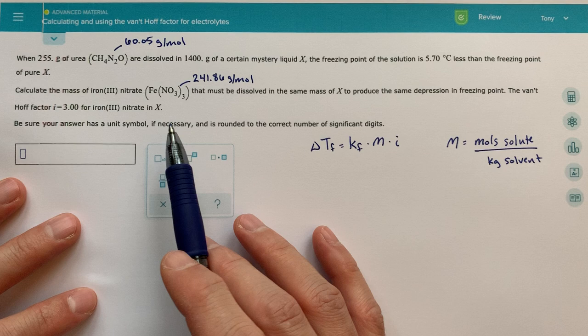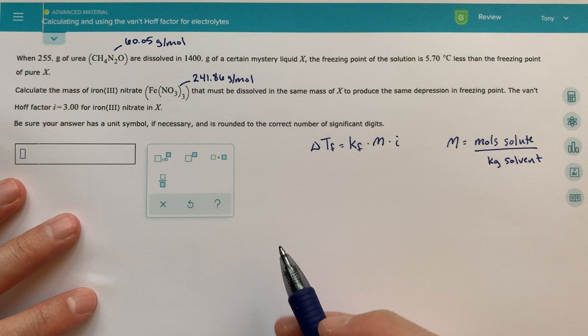And again, we're going to apply this equation, solve for the KF for our mystery liquid X, our mystery solvent X, and then use that information to solve for our final answer.